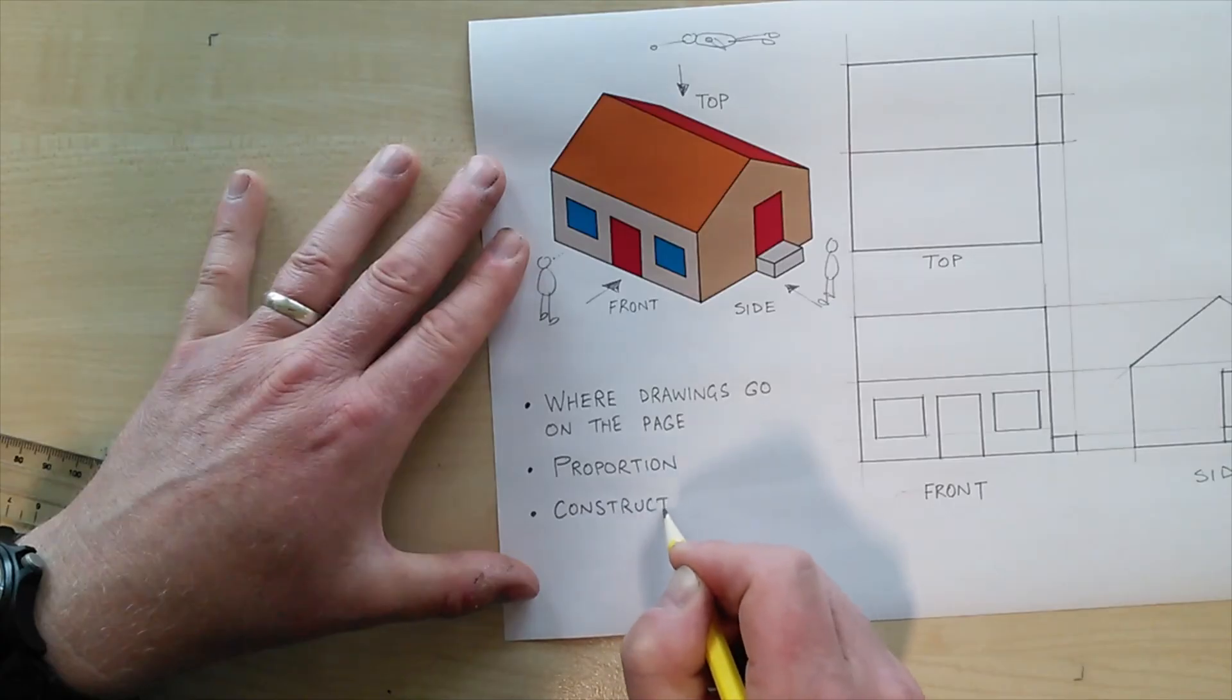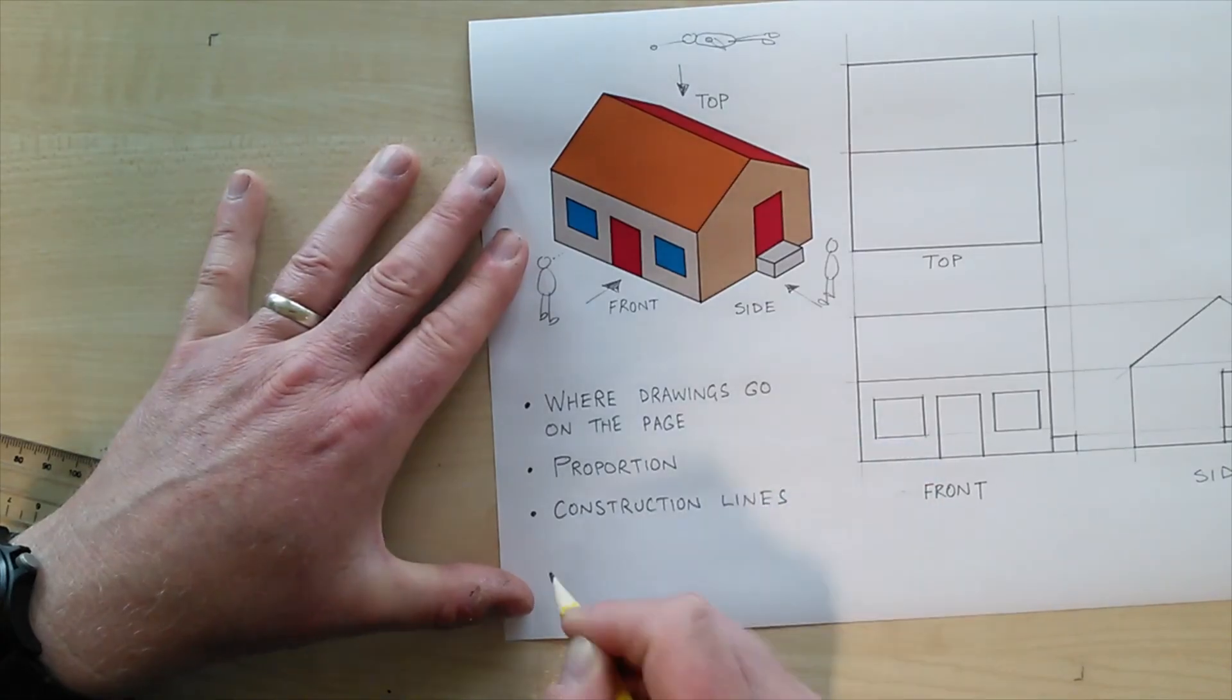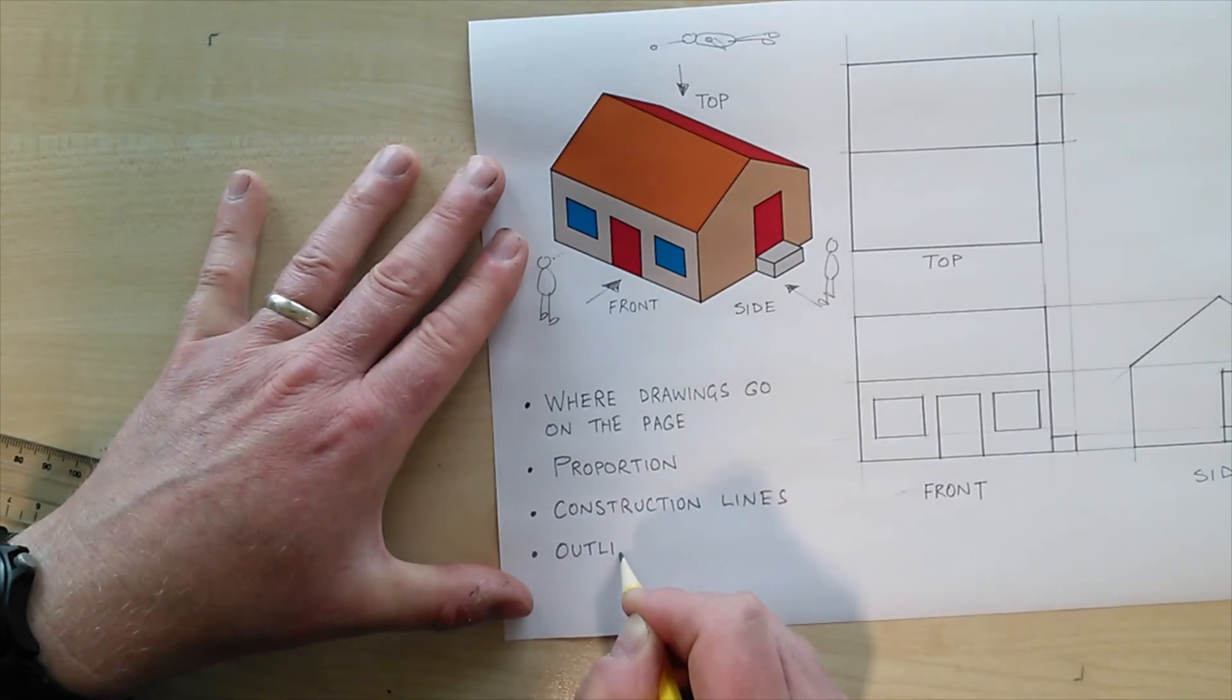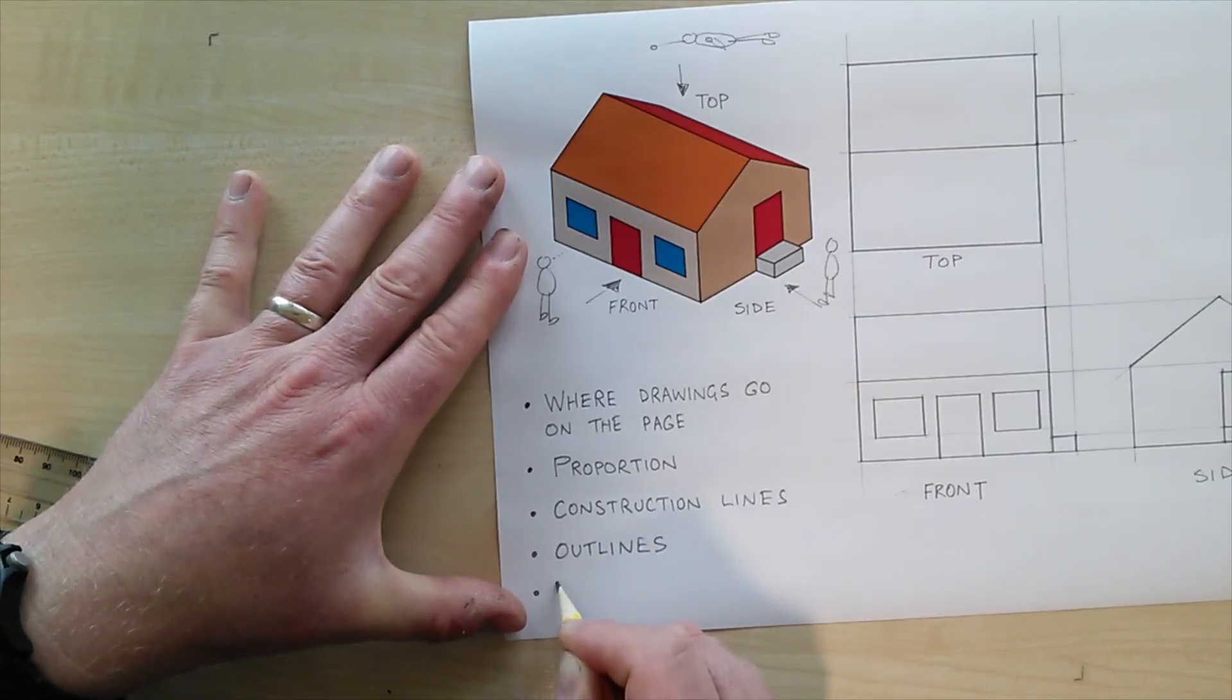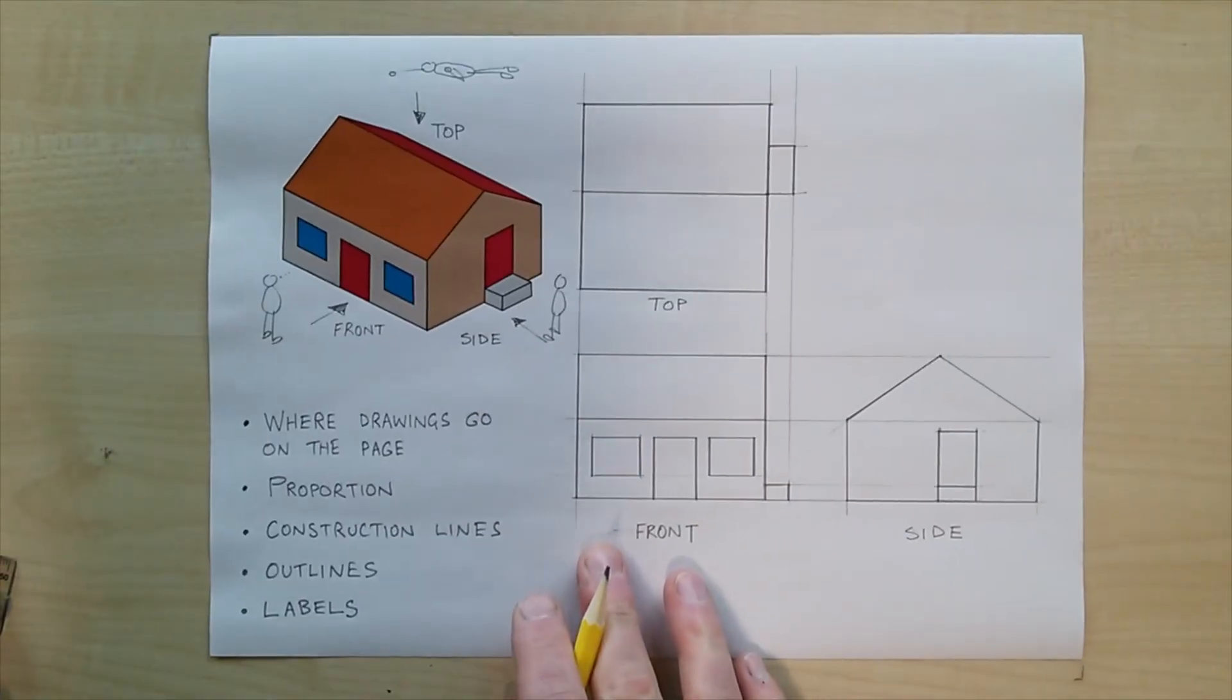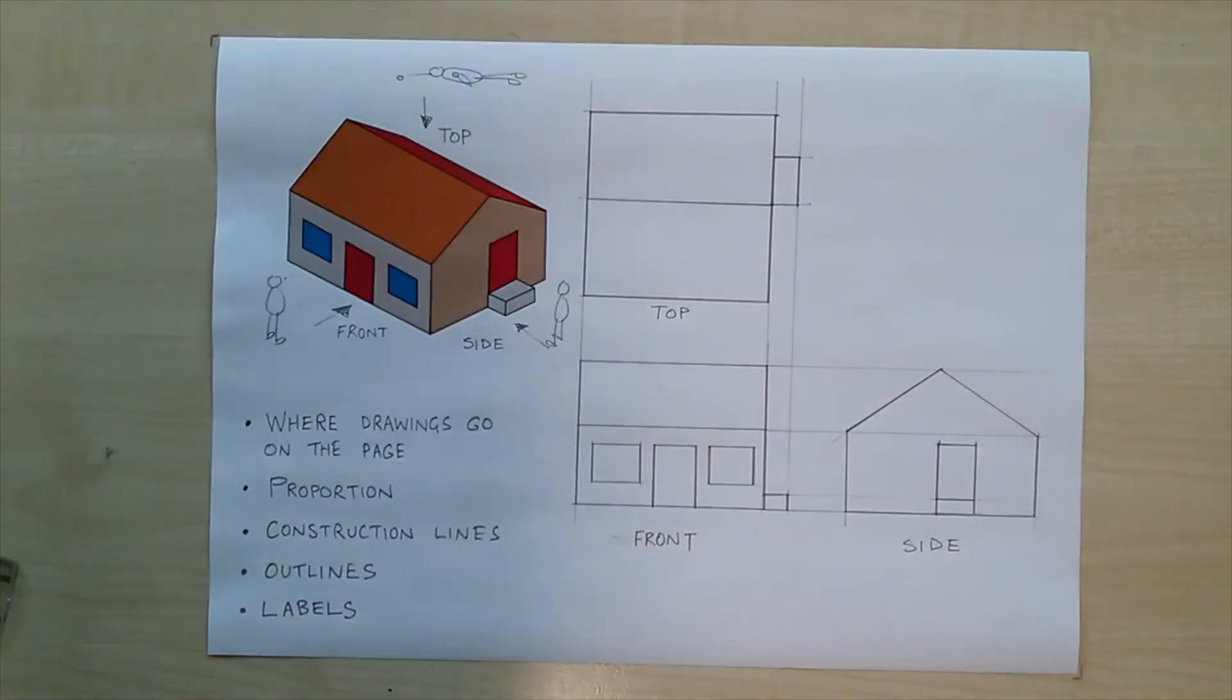We also learned that at this stage the proportion is important, getting the widths and the heights and the lengths of things correct. We learned how to draw light construction lines, darker outlines and finally to put labels onto our orthographic views as well.